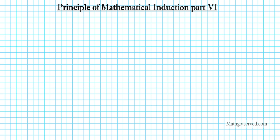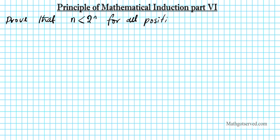Good day students. In this video we are going to go over an example of proof by mathematical induction. What we are going to prove is that n is less than 2 to the n for all positive integers n, where n is greater than or equal to 1 and n is in the set of integers.